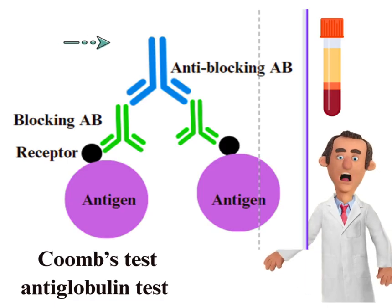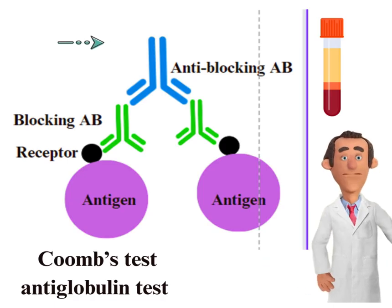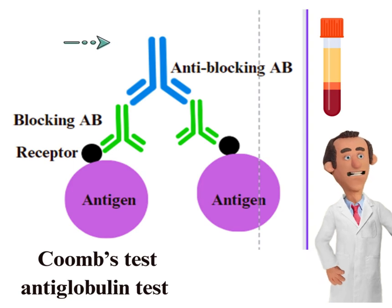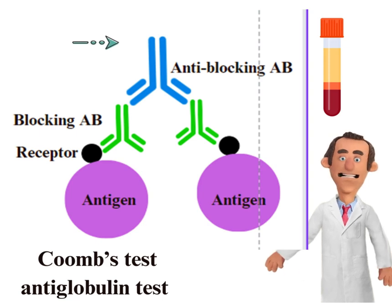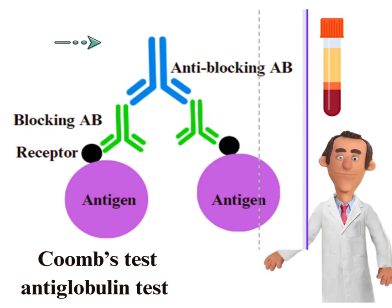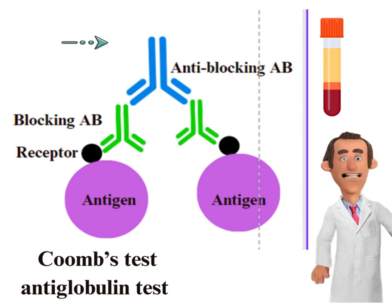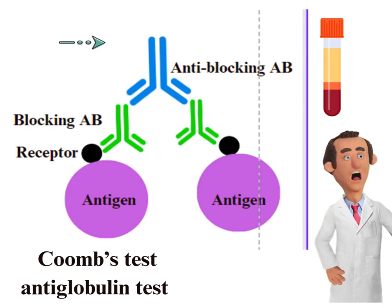What is the Coombs test? Serum may contain brucella antibodies that do not produce agglutination. The Coombs test detects non-agglutinating or incomplete antibodies by the addition of rabbit anti-human globulin; these antibodies appear in the subacute stage of infection.